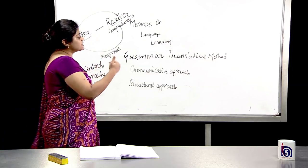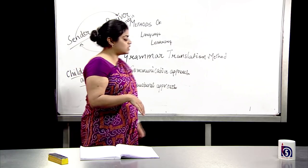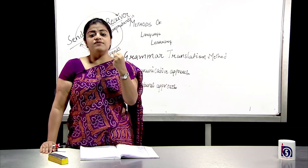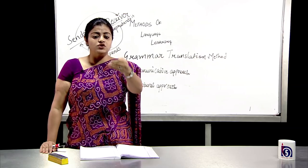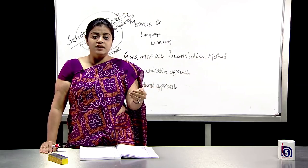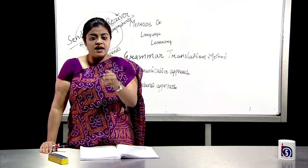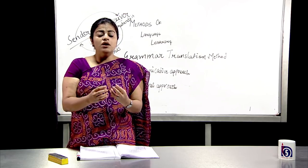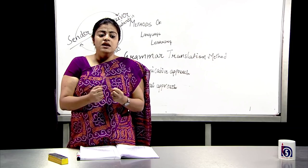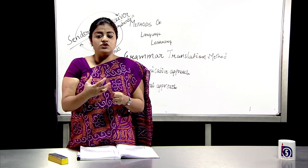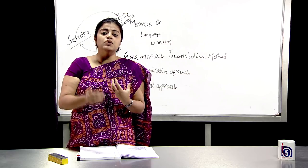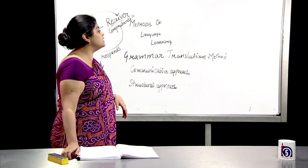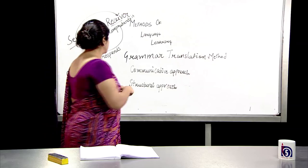The first principle of the communicative approach is the role of the teacher, which is reduced to that of a mere facilitator who gives real-life situations to students and lets them communicate. Children will learn on their own, understand the communication loop, and enhance their perspective-taking ability — because they need to know what the other person is saying before responding. Second, lessons are usually theme-based.